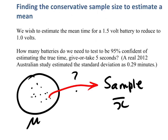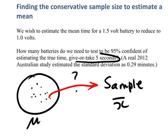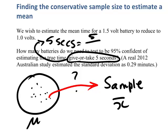Now in this example, the standard deviation is 0.29 minutes. We're also told that the margin of error — the amount we give or take — is about 5 seconds. We really need to make sure that everything is in the same units, and 5 seconds turns out to be 5 out of 60 seconds in a minute, or about 0.0833 minutes.